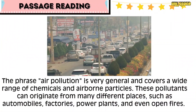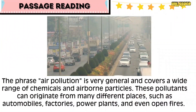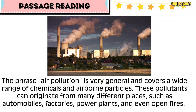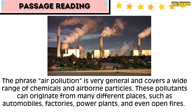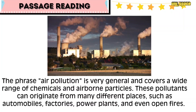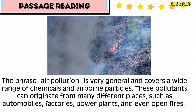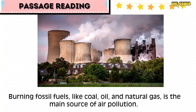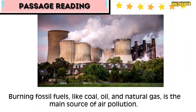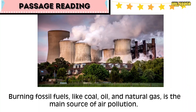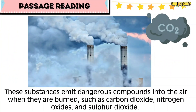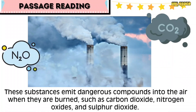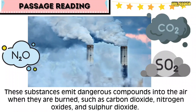Air pollution is very general and covers a wide range of chemical and airborne particles. These pollutants can originate from many different places such as automobiles, factories, power plants, and even open fires. Burning fossil fuels like coal, oil, and natural gas is the main source of air pollution. These substances emit dangerous compounds into the air when they are burned, such as carbon dioxide, nitrogen oxides, and sulfur dioxide.